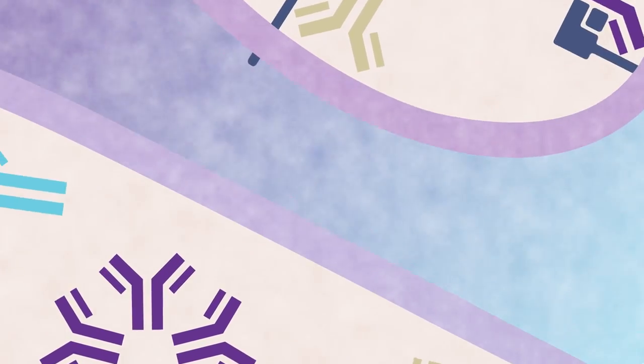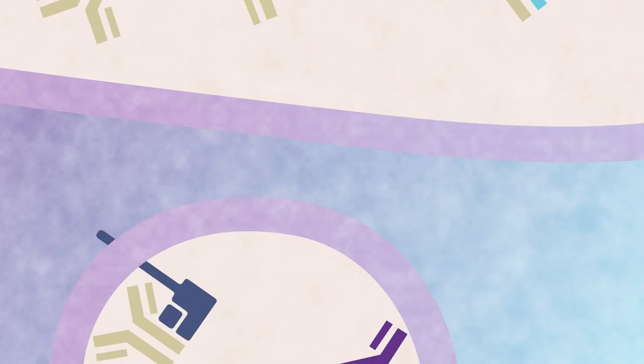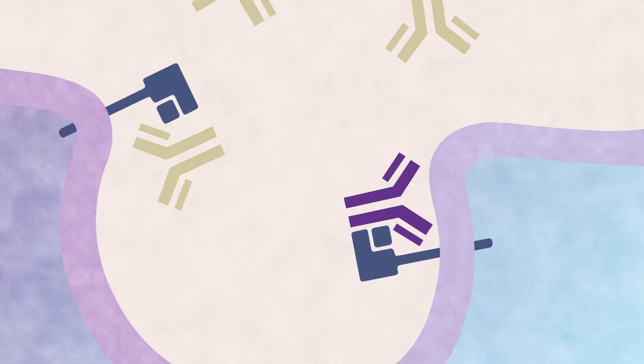They are then transported back up to the surface of the cell, and at neutral pH they're released back into circulation. And that's how they gain their long half-life.